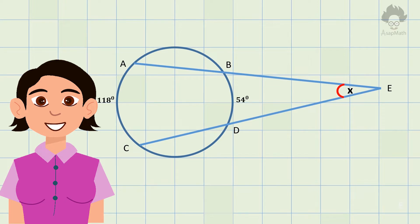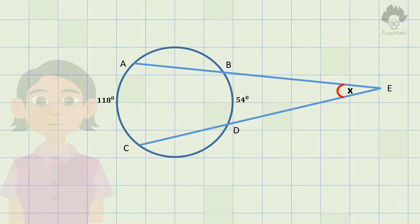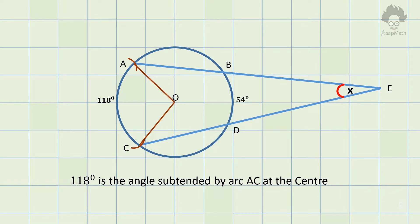First, we should mark the given details on the figure. Angle of arc AC is given as 118 degrees. It suggests that angle subtended by arc AC at center is 118 degrees. Similarly, angle subtended by arc BD at center is 54 degrees.